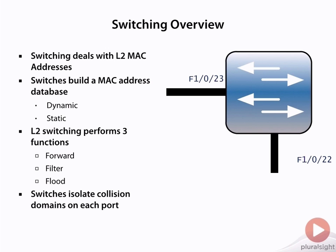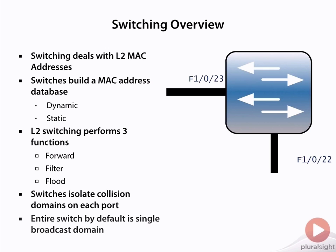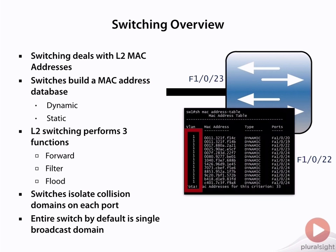In this example, we see the switch. We now have two interfaces, F1-0-23 and F1-0-22, and each of those would be a single collision domain. In this case, we have two collision domains on the switch, and the entire switch, by default, is a single broadcast domain.